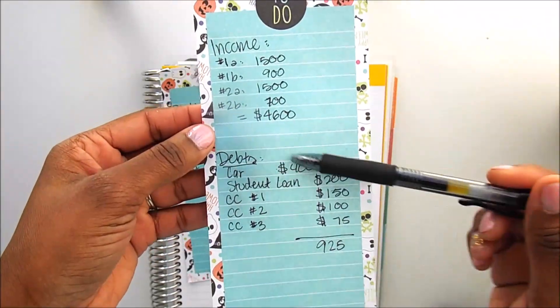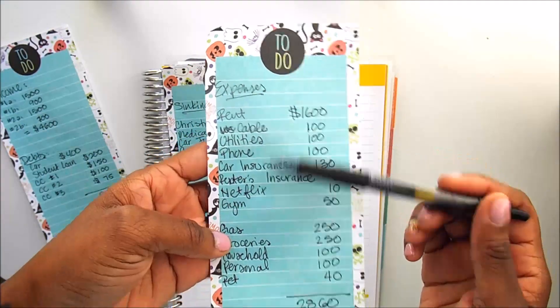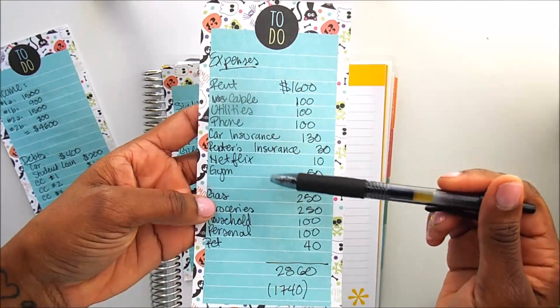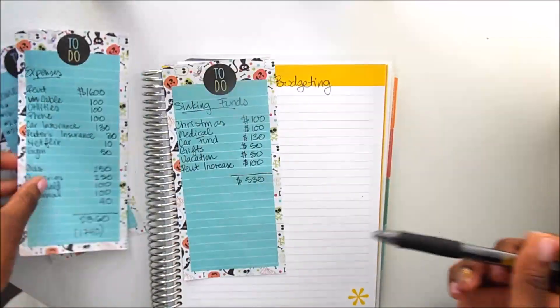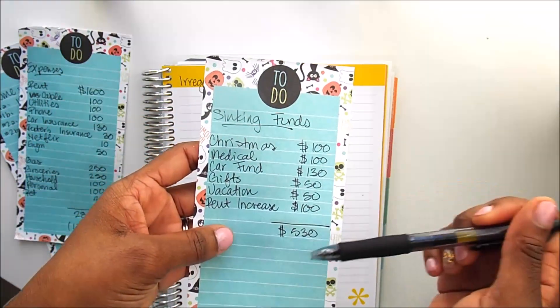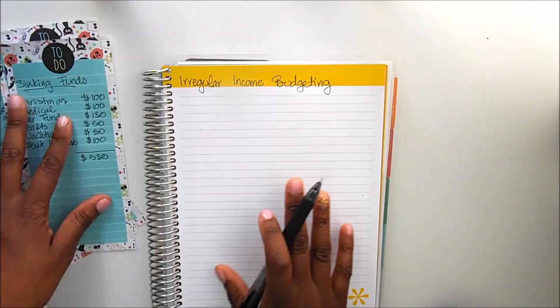So I wrote out a couple of different things and just different information that I would need for this exercise. So the first thing that I have here is our income. I'm probably going to say 'our' a lot because I talk about our finances a lot, but again none of these numbers are real. So I have the income, I have debts, I have some expenses here. Some are just set expenses and then some are cash expenses. And then I have a list here for sinking funds as well. So let's go ahead and get started.